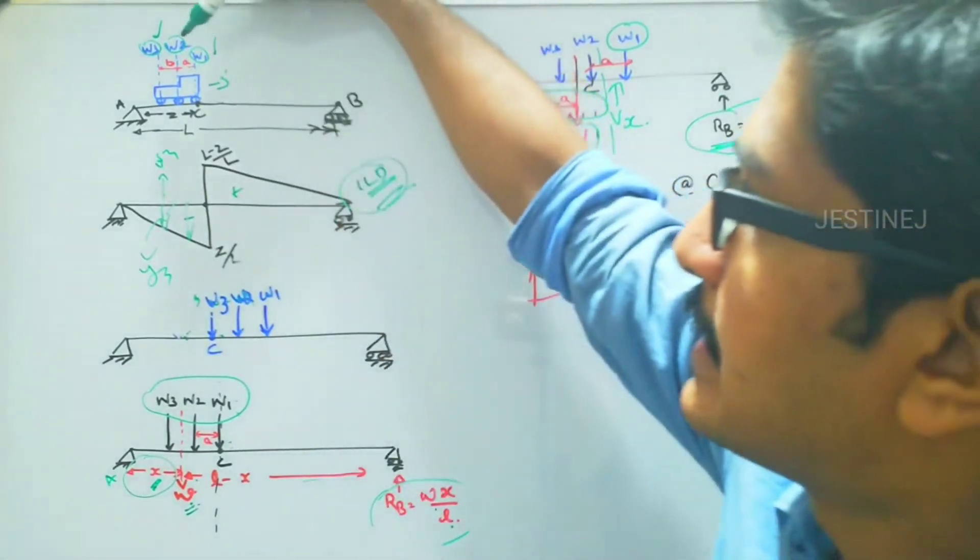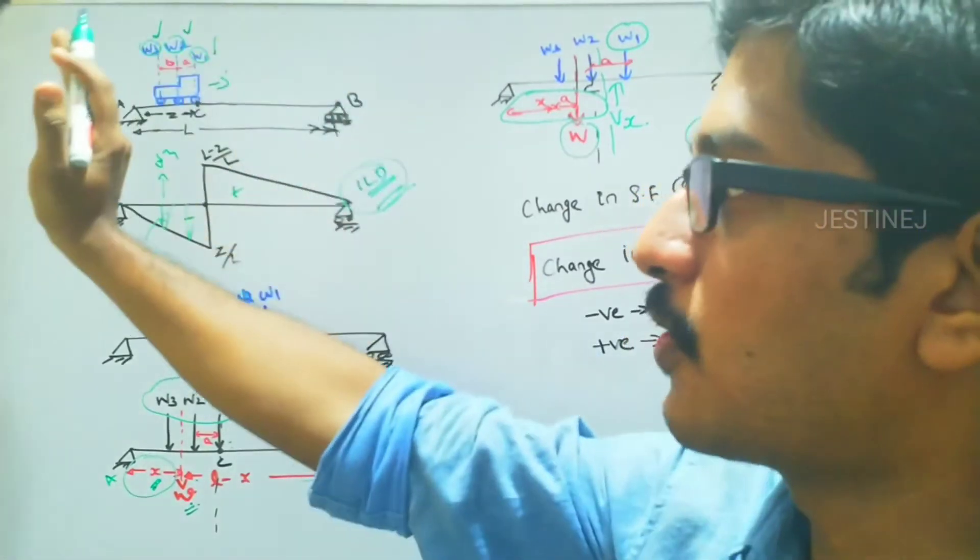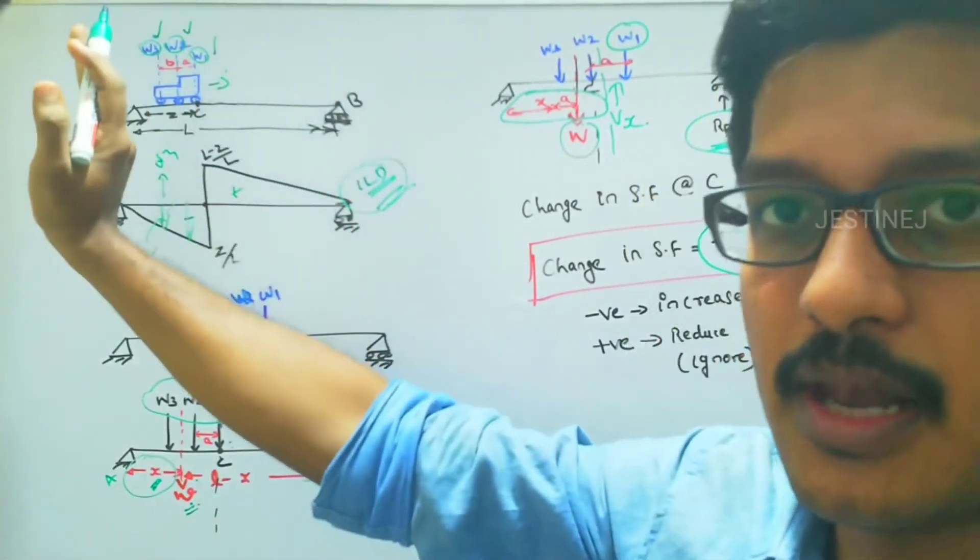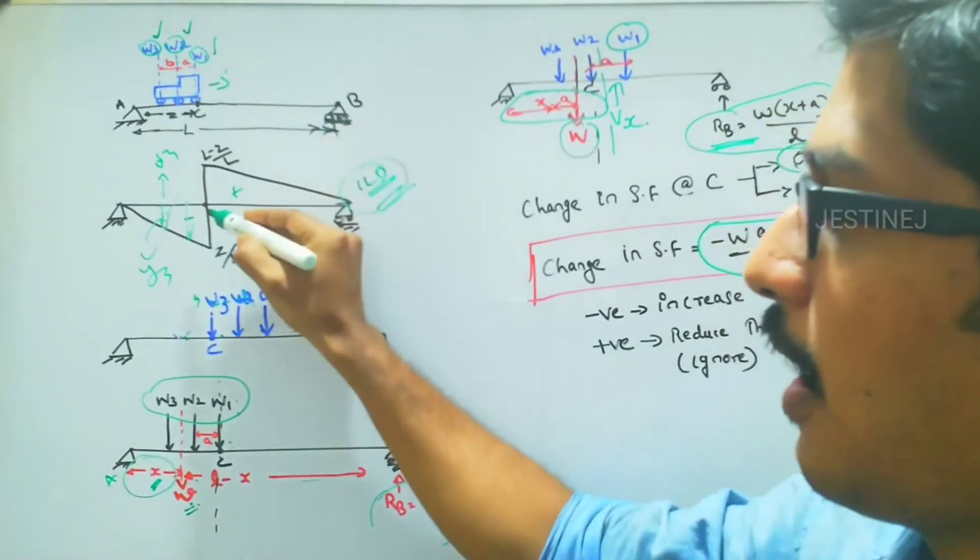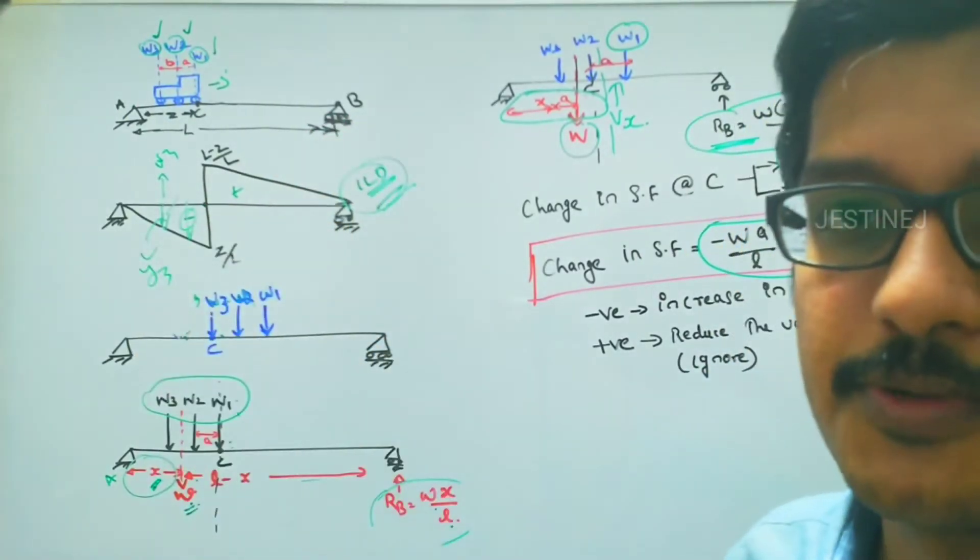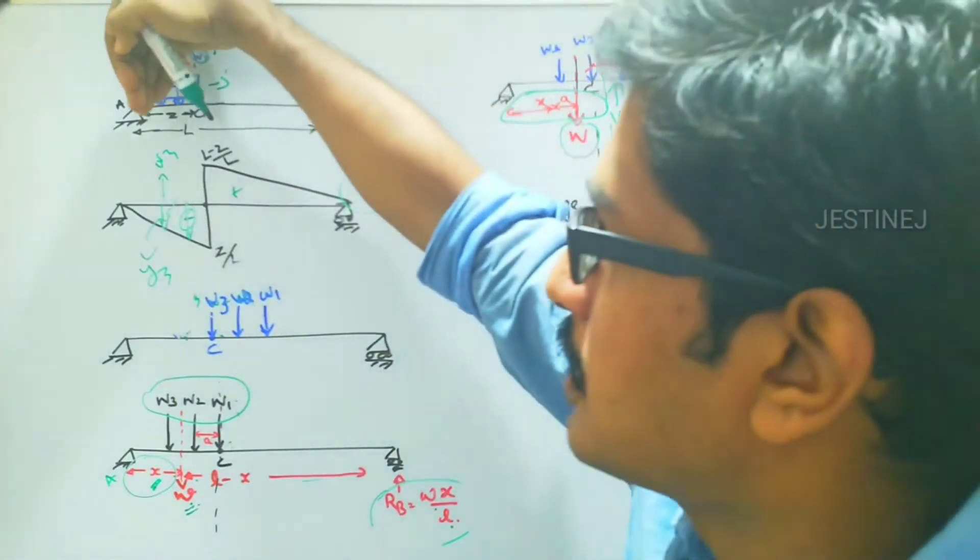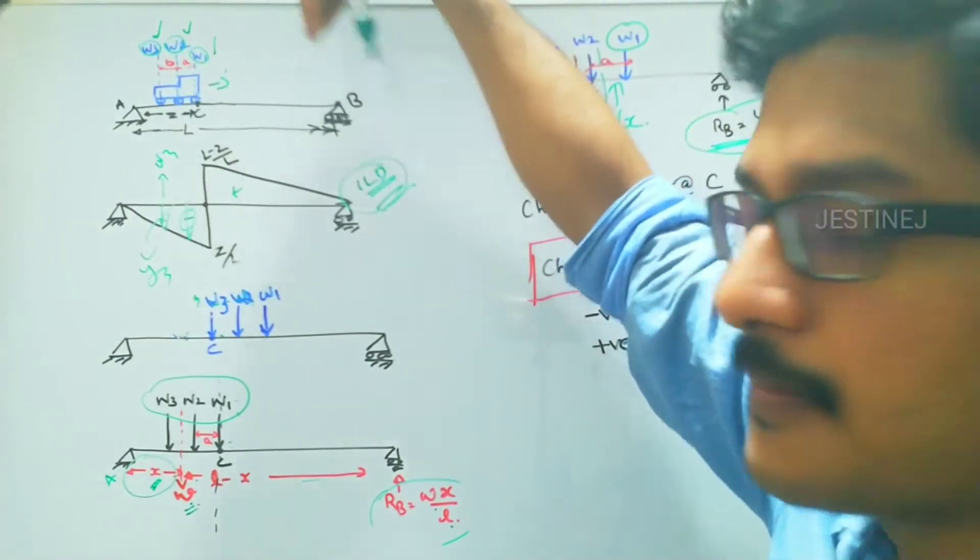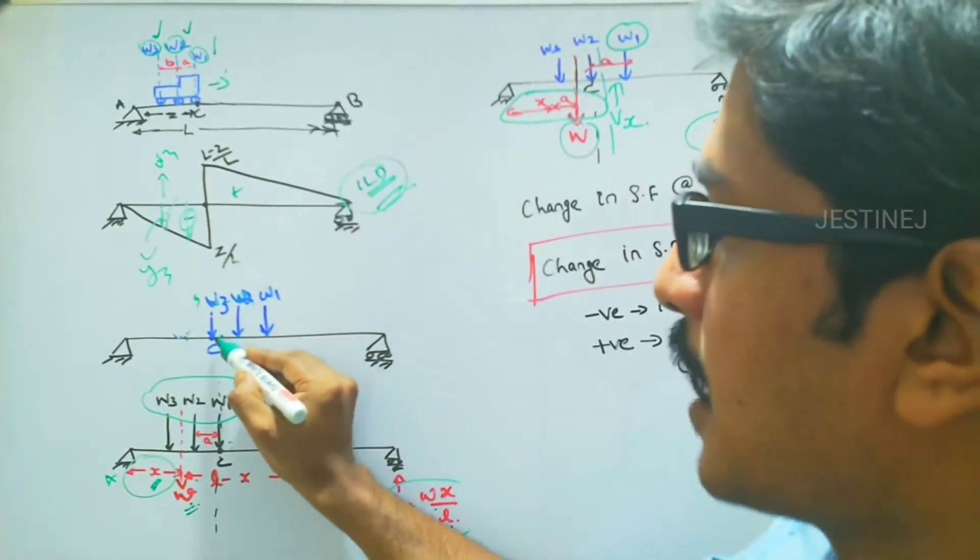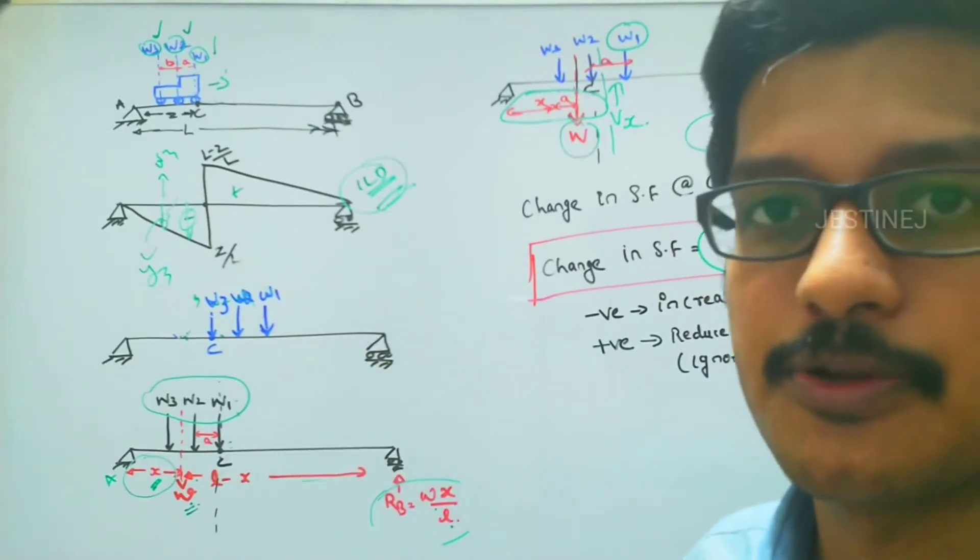So this is the situation: if all the concentrated loads are acting to the left side or behind C, it will have the maximum negative shear force. And if all the concentrated loads are in front of point C, that means all the loads W3 is acting at the point C, it will give the maximum shear force.